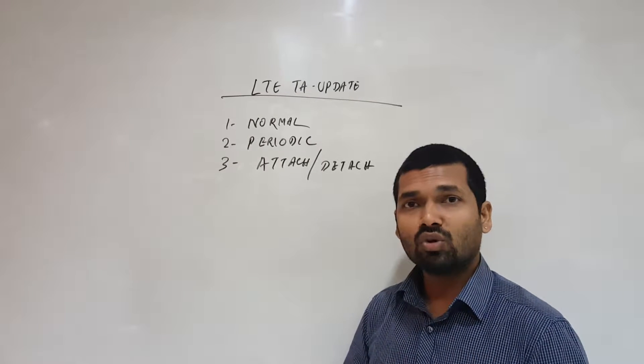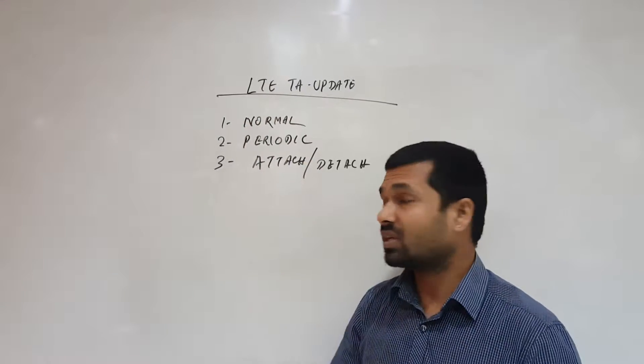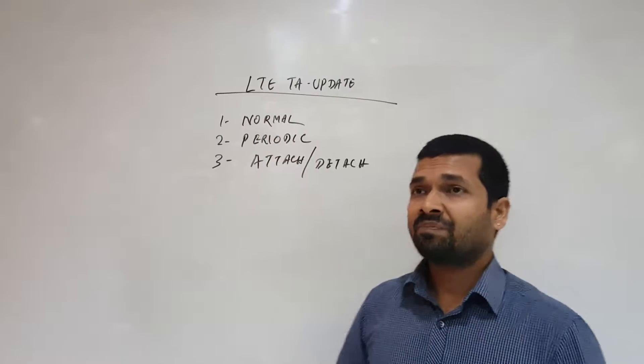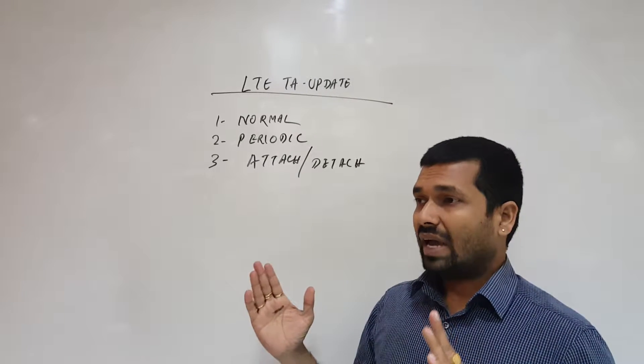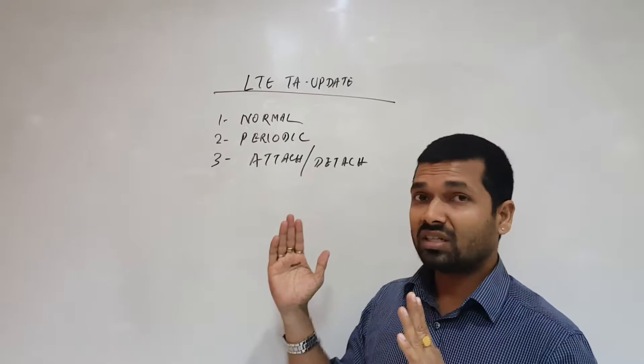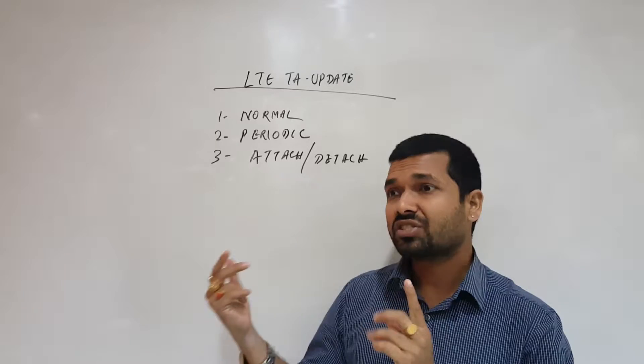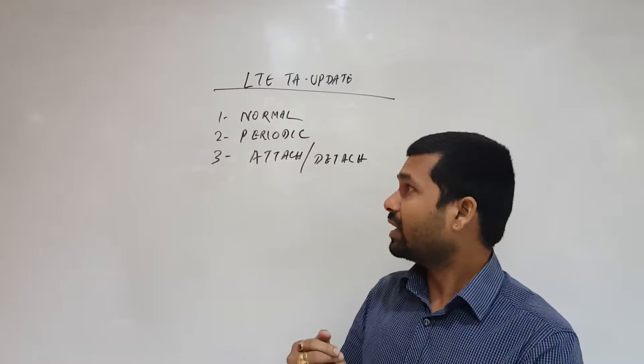in idle mode, or from connected I came to idle. I had done my location update as per normal process and I am idle for a certain period. When the tracking area timer expires - let's say I have set it to two hours - after two